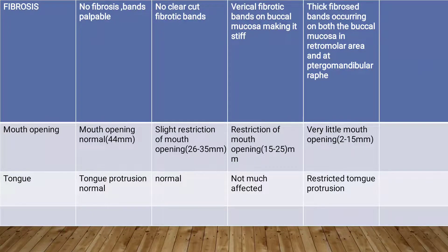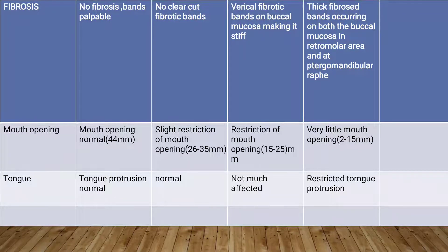Regarding mouth opening: in grade one it is normal at 44 mm; in grade two there is slight restriction with mouth opening between 26 to 35 mm; in grade three it reduces to 15 to 25 mm; in grade four there is very little mouth opening at 2 to 15 mm. For tongue movement: in grade one and grade two, tongue movement is normal; in grade three it is not much affected; in grade four and grade five there is restricted tongue movement.